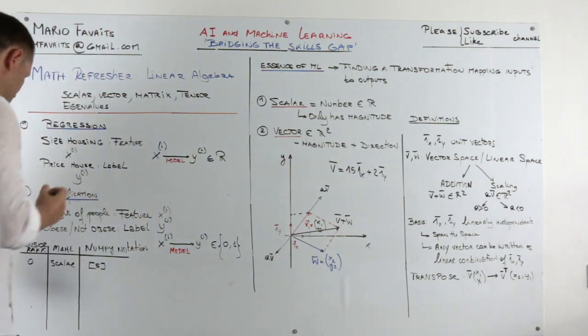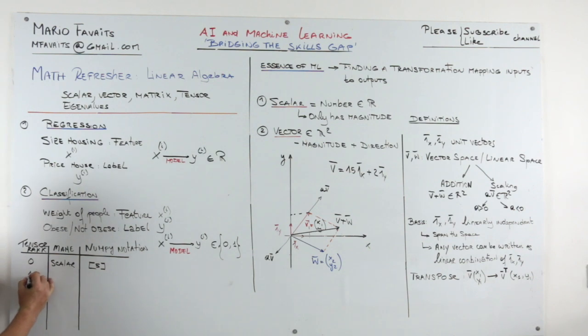Now here, the tensor of rank 1, we call a vector. And in NumPy, you have, for example, 2. That's a vector. So the straight brackets here and just your number, this is a vector. Another vector could be 4, 0. These are all vectors.